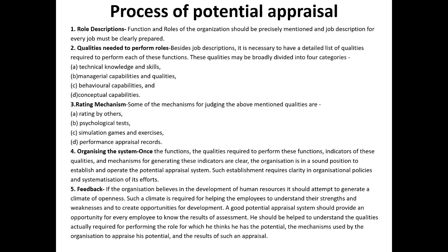When we talk about the process of potential appraisal, there are a few steps. Step one is role description: the organization should precisely mention the kind of role for which they are looking for a suitable person or want to promote someone. Step two, the organization should identify the qualities required to perform that role. These qualities may be divided into four categories: technical knowledge and skills, managerial capabilities, behavioral capabilities, and conceptual capabilities.